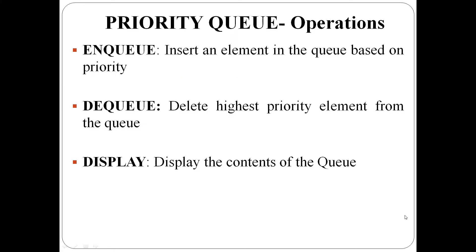Operations on priority queue. There are three operations. First one is enqueue — insert an element in the queue based on priority. Second one is dequeue — delete the highest priority element from the queue. Third one is display.